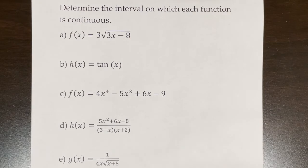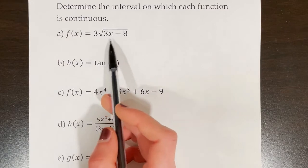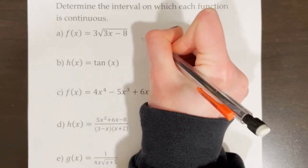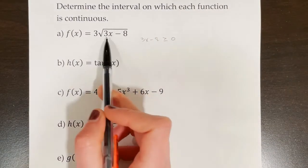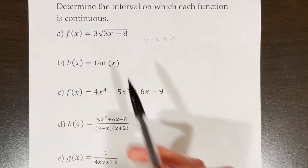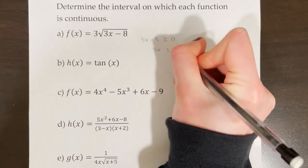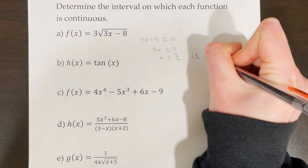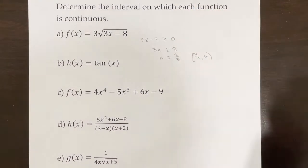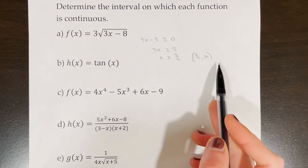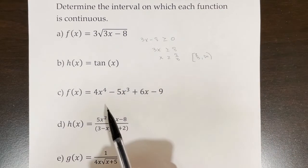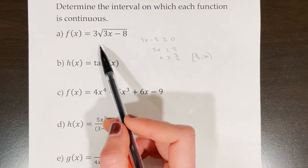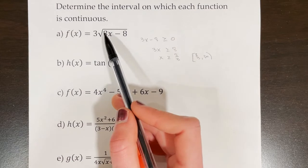Now we're asked to determine the interval on which each function is continuous. For part a, we use the property that we can only take the square root of a number greater than or equal to zero. So three x minus eight must be greater than or equal to zero. Solving the inequality: three x is greater than or equal to eight, so x must be greater than or equal to eight-thirds. We write this as bracket eight-thirds to infinity — a closed bracket because eight-thirds is included. Since square root functions are continuous at every point on their domain, this is the interval on which the function is continuous.